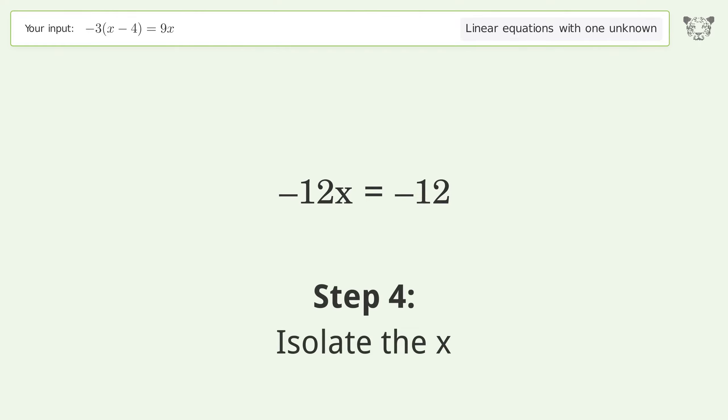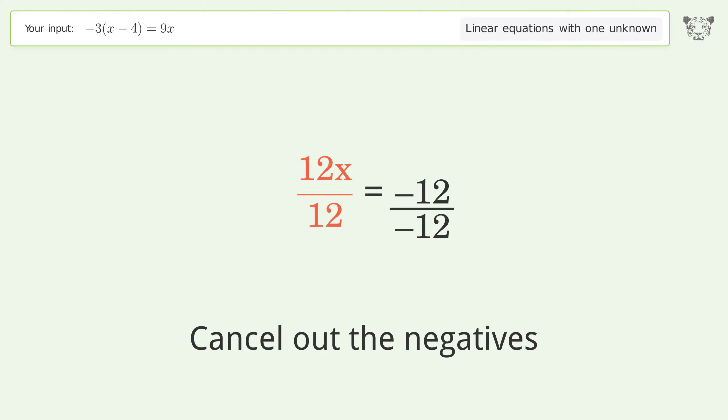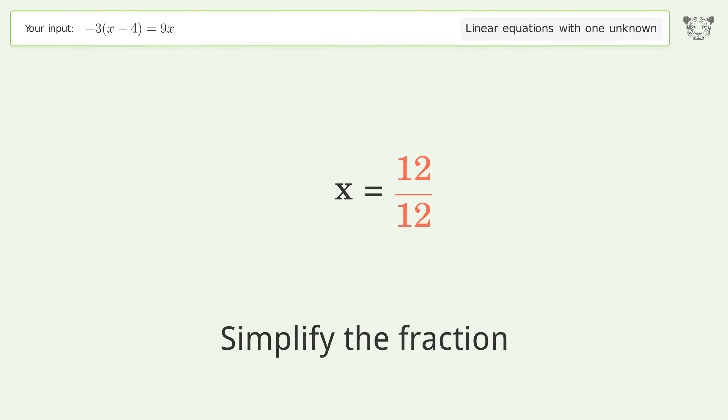Isolate the x. Divide both sides by negative 12. Cancel out the negatives. Simplify the fraction. Cancel out the negatives. Simplify the fraction.